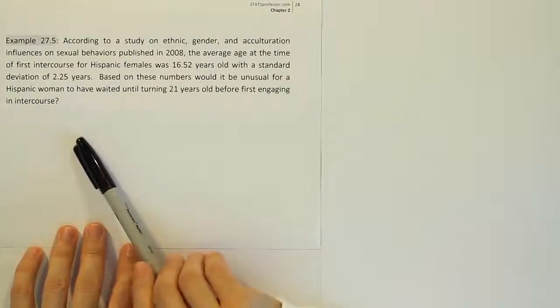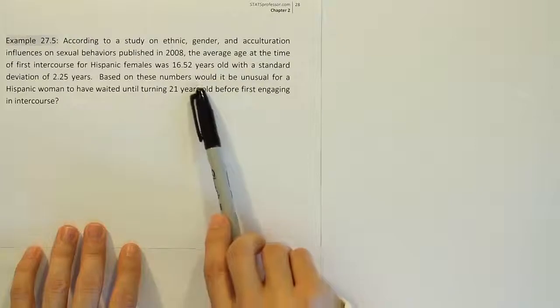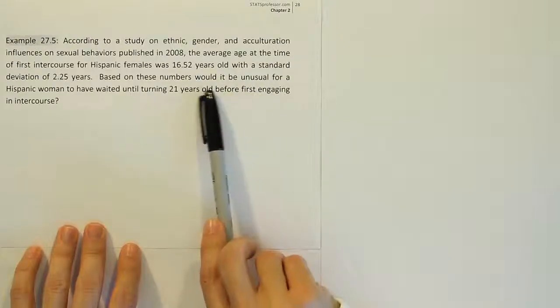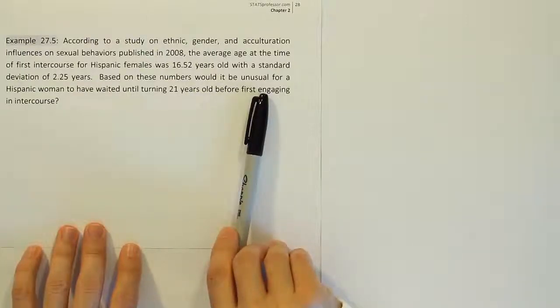The thing that pops out at me in this problem is this phrase: would it be unusual? Whenever you're asked that question, if something is unusual, you want to start to think about the z-score, because the z-score gives us a way to assess if something is unusual or not.